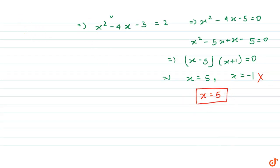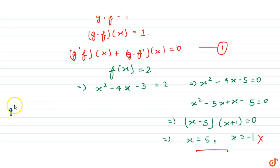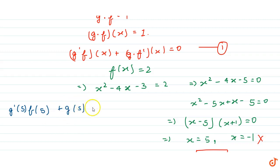Substituting x equals 5 into equation 1, we get g' of 5 into f of 5 plus g of 5 into f' of 5 equals 0.